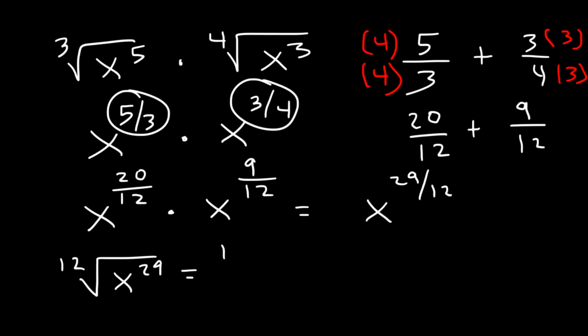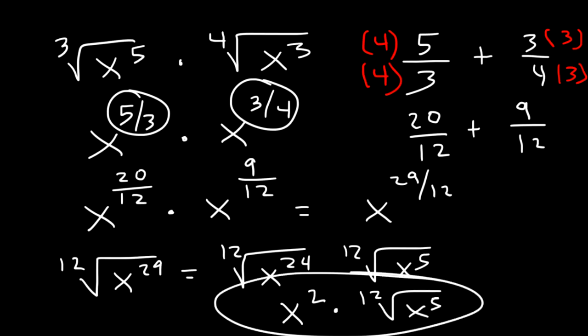Now I'm going to break this down into 24 and 5. 24 and 5 adds up to 29. The 12th root of 24. 24 divided by 12 is 2. So the final answer is x squared times the 12th root of x to the 5th. And that's as far as we can simplify it.